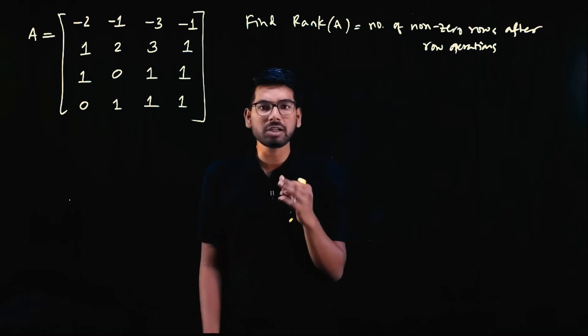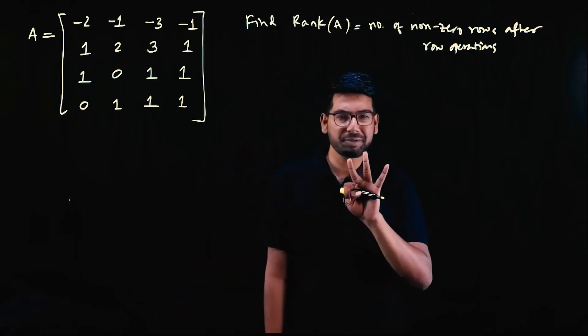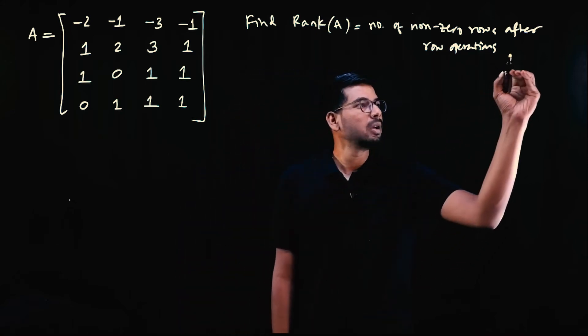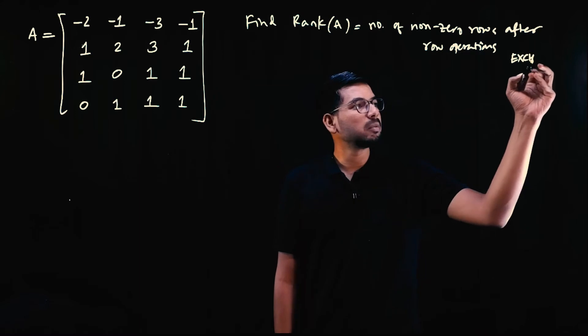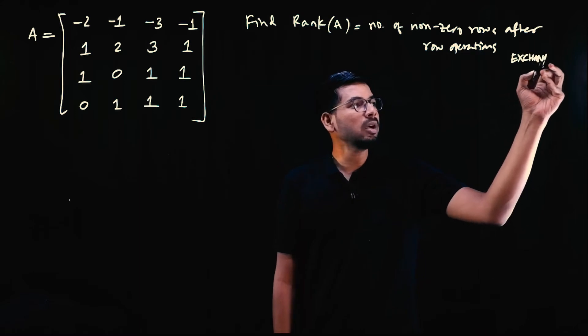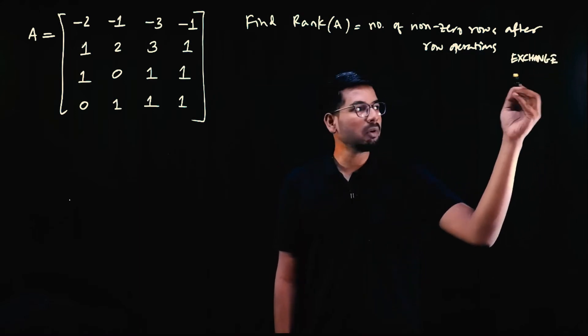The row operations we can do are: exchange rows, multiply a row by a constant (scaling), and add or subtract one row from another.